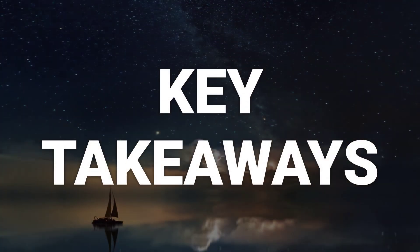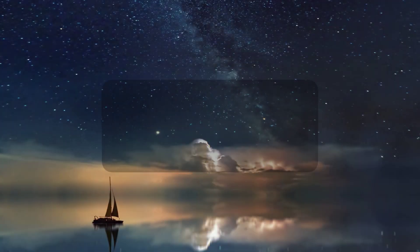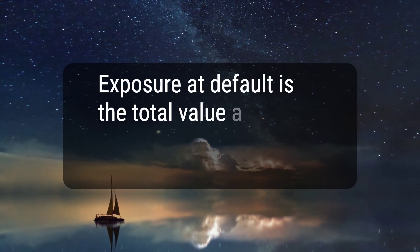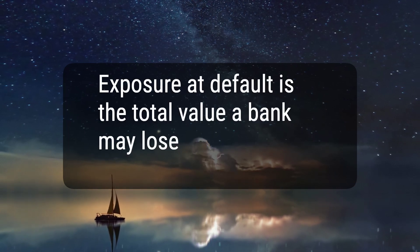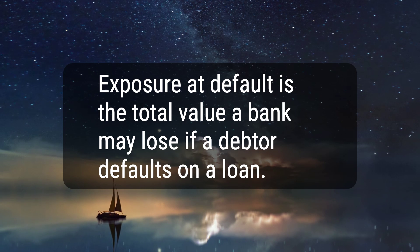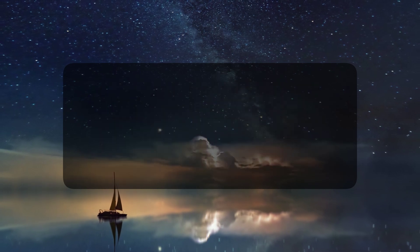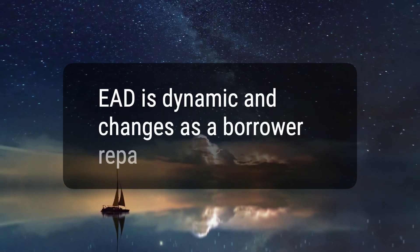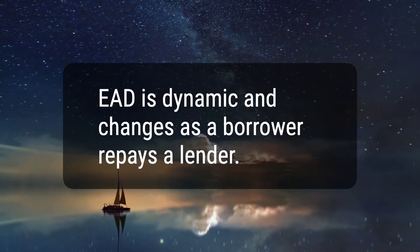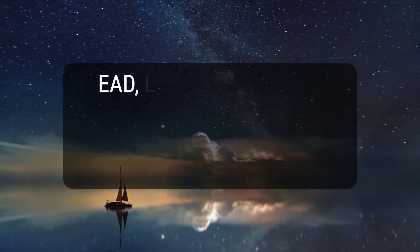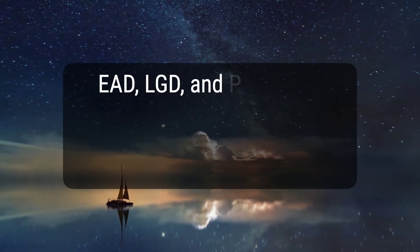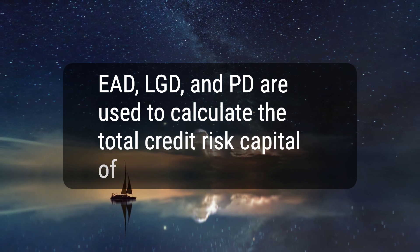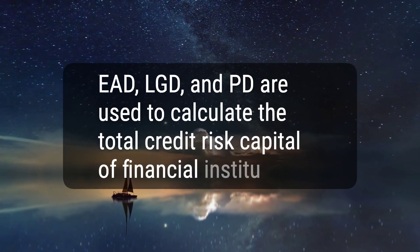Here are five key takeaways. First, exposure at default is the total value a bank may lose if a debtor defaults on a loan. Second, EAD is dynamic and changes as a borrower repays a lender. Third, EAD, LGD, and PD are used to calculate the total credit risk capital of financial institutions.